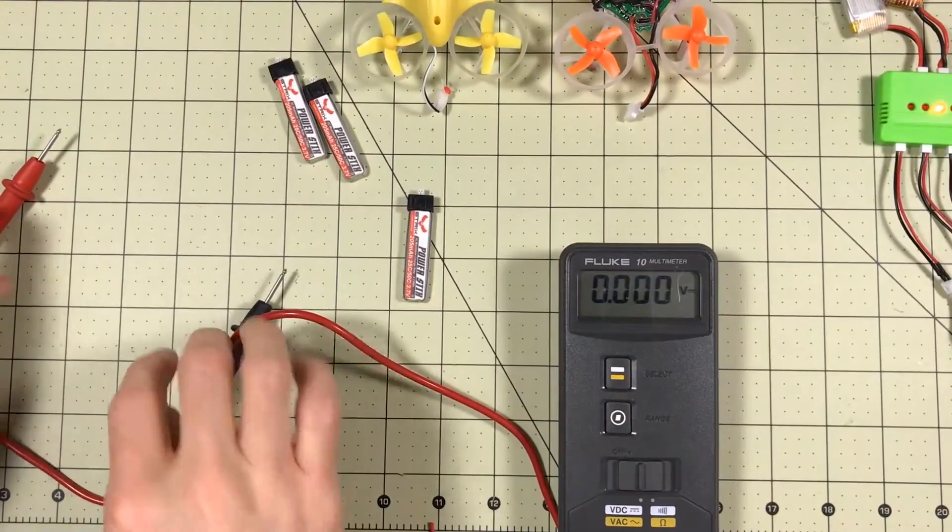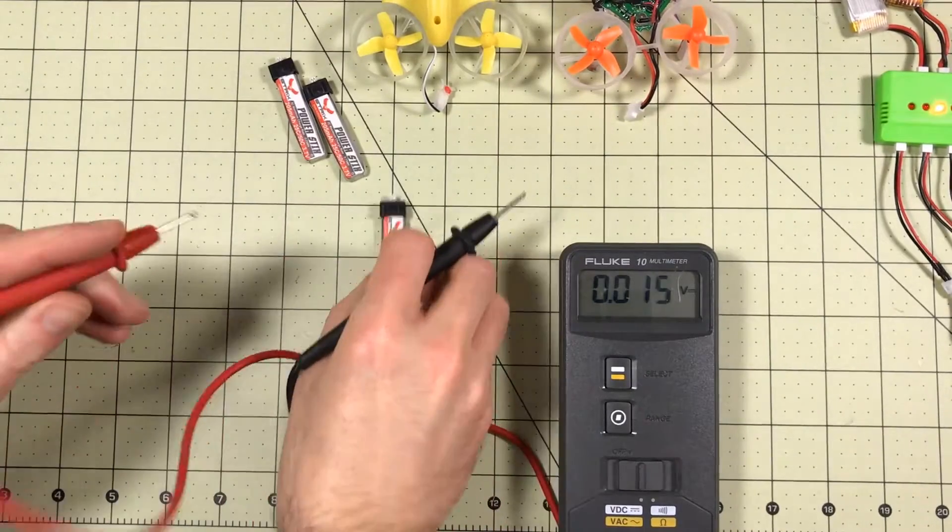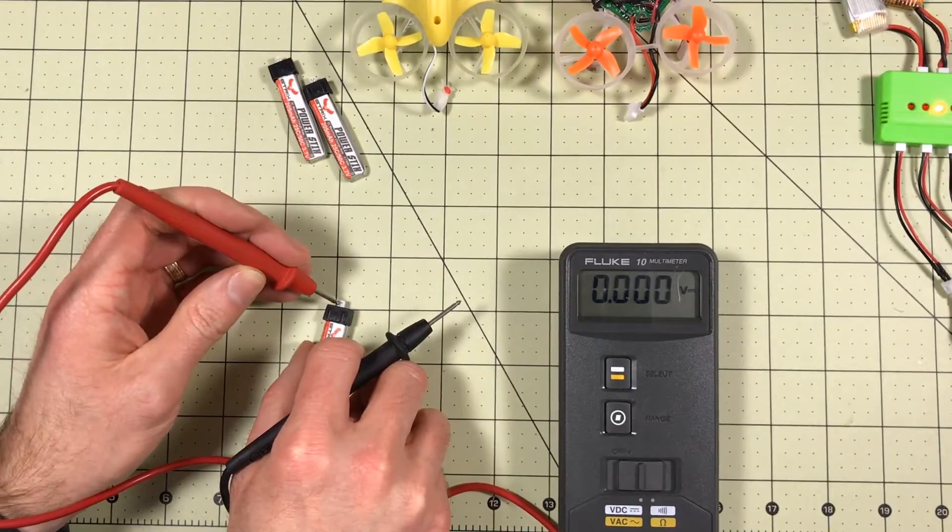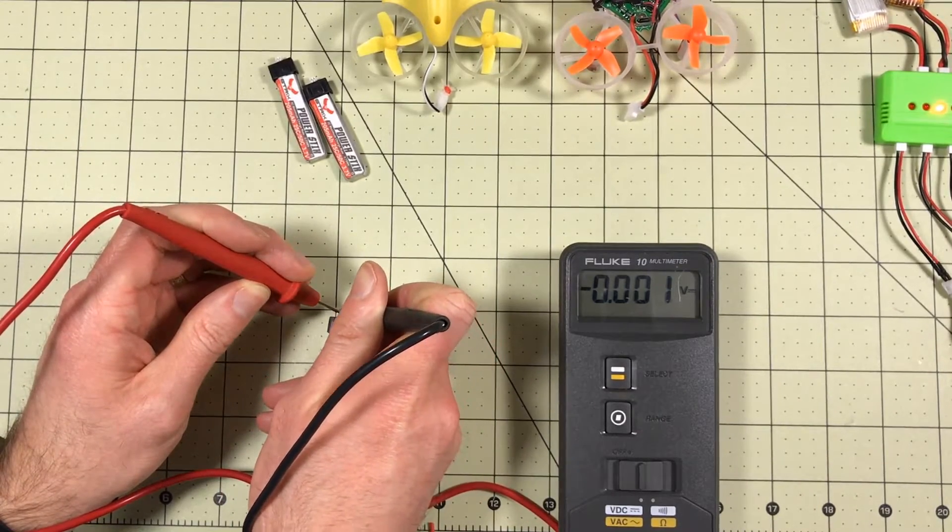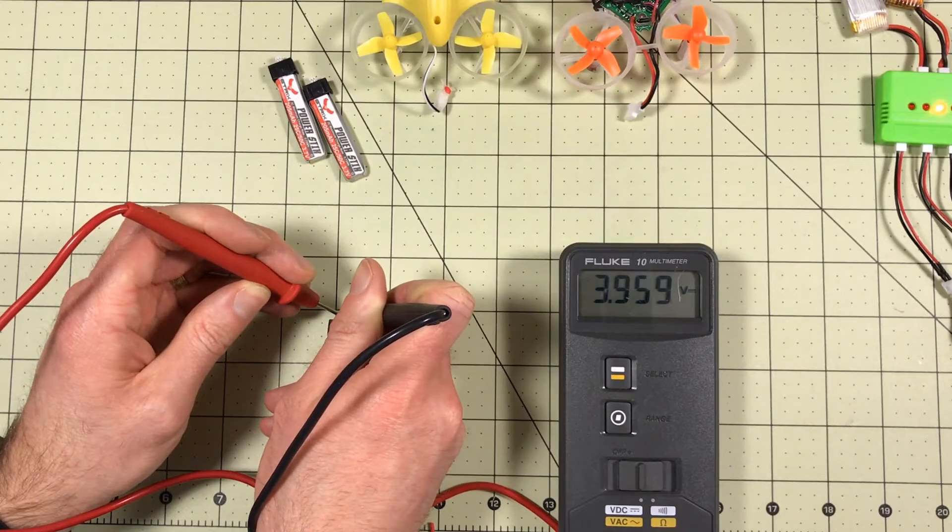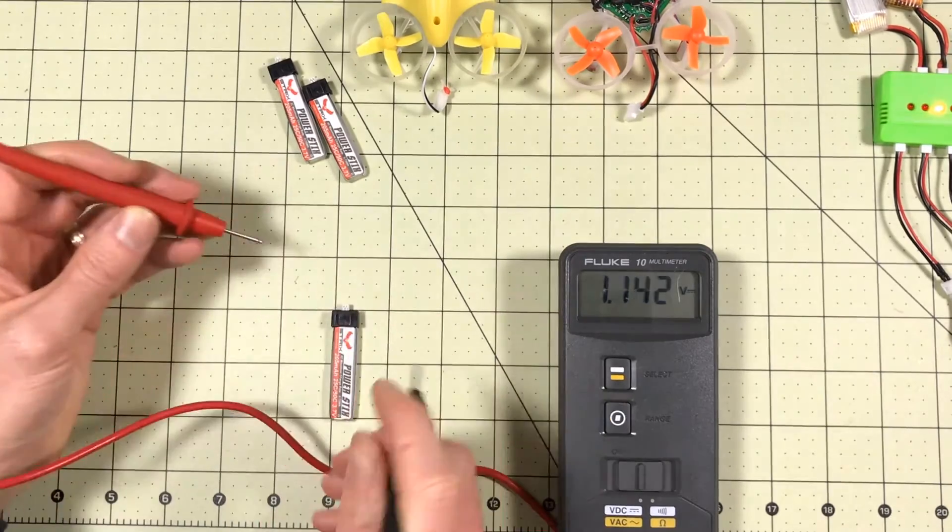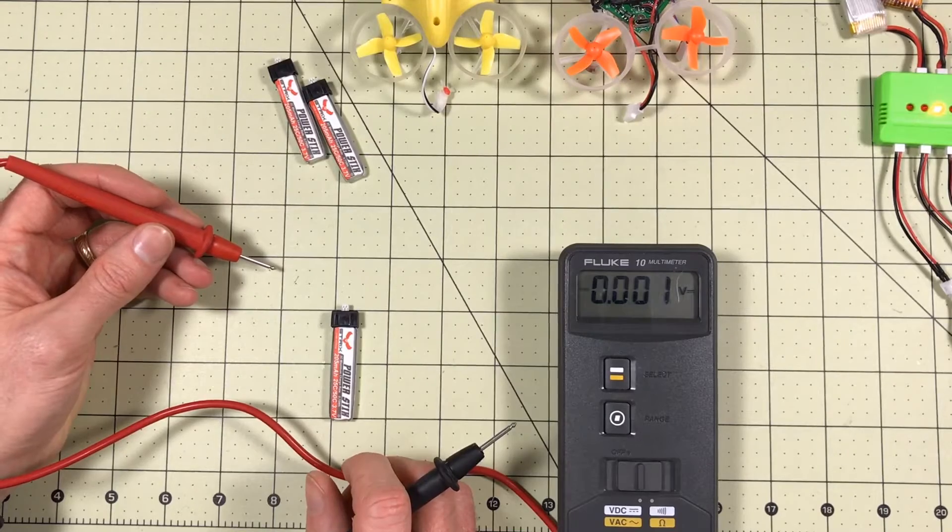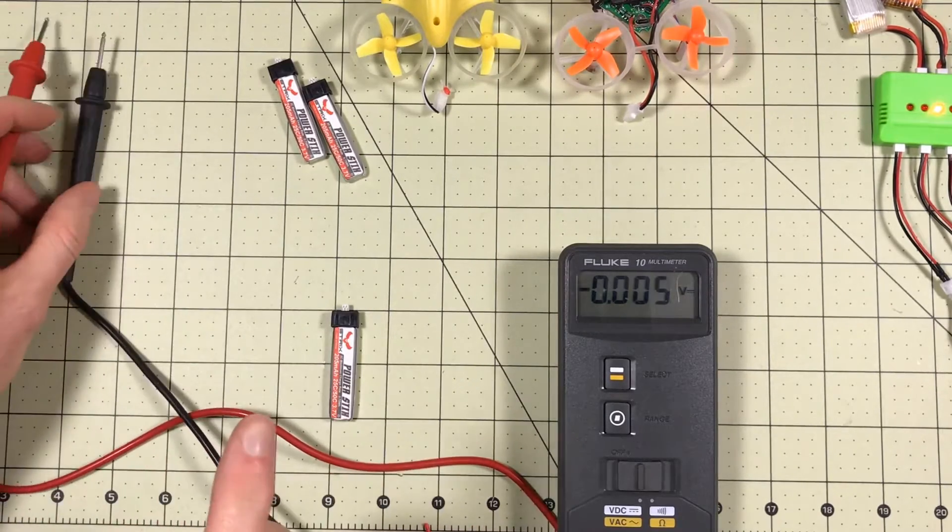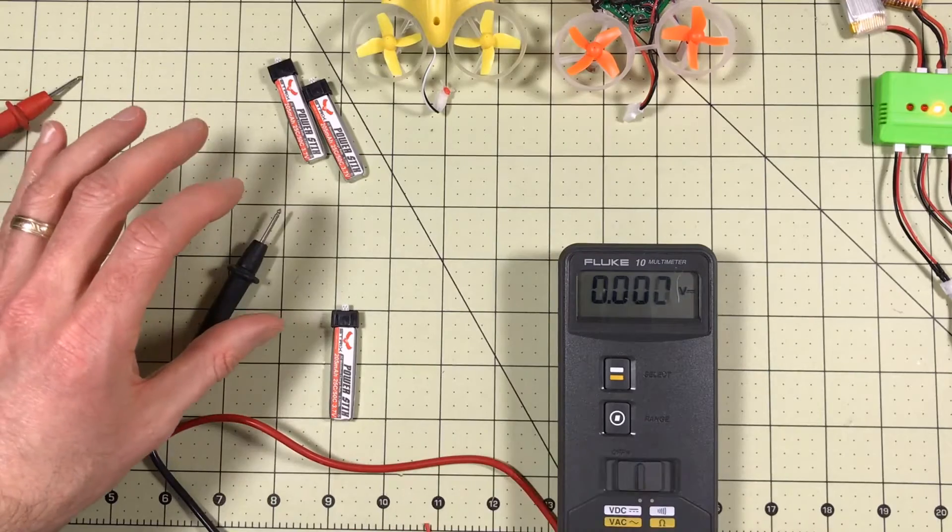So either something is wrong with this battery, or we've got a problem with the quadcopter, because it only flew for about a minute, which was really, really bad. So we're going to test and see, 3.9 volts. It went down to 3.9 volts in no time flat. We're going to try another battery just to see what happens.